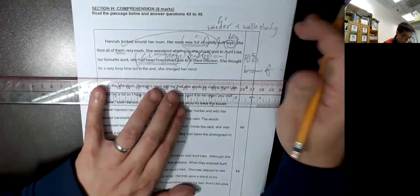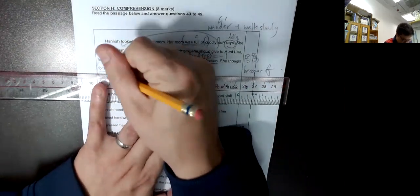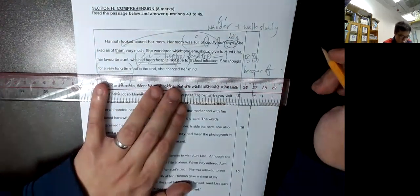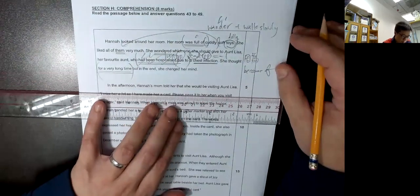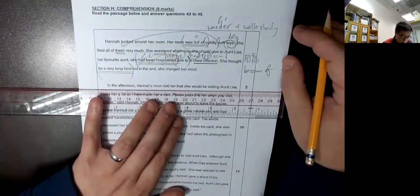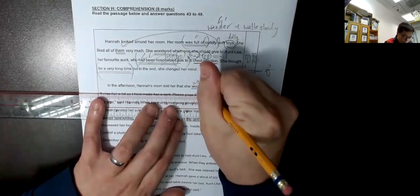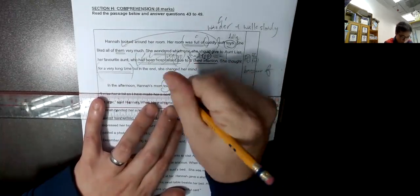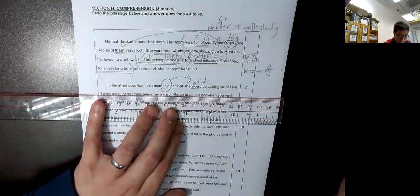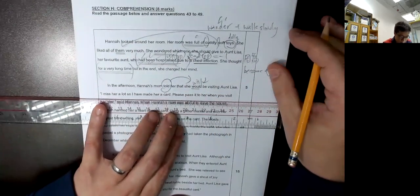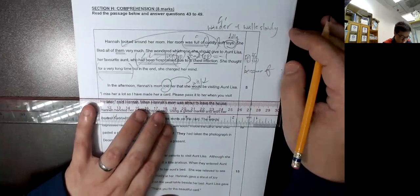She thought for a long time. 講多久要用 for, for a long time. But in the end, she changed her mind, 改變她的想法. In the afternoon, Hannah's mom told her that she would be visiting Aunt Lisa. I miss her a lot.